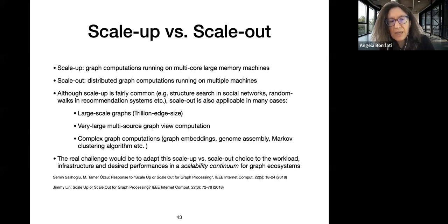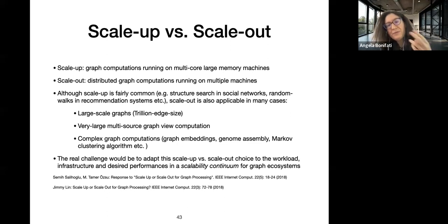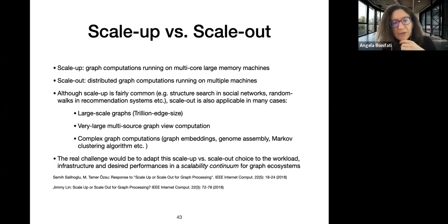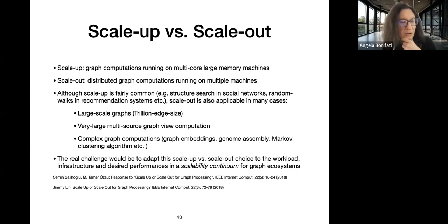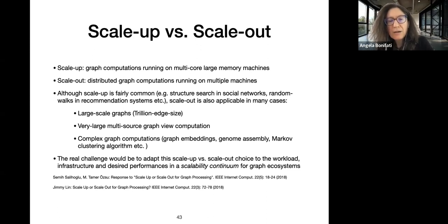In our vision on the future of big graphs, we think there is no predefined choice. One has to adapt from scale-up to scale-out depending on the underlying infrastructure and desired performance — a kind of scalability continuum for graph ecosystems. There is no one-size-fits-all solution; you can combine the two depending on the ecosystem you are building.